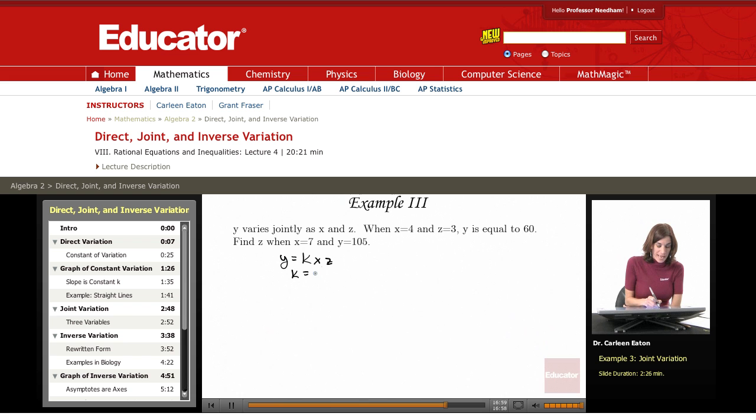I would divide both sides by xz to get y over xz. Now I can set up a proportion. I know that k equals y over xz, and I'm given this first set of values: x equals 4, z equals 3, and y is 60.